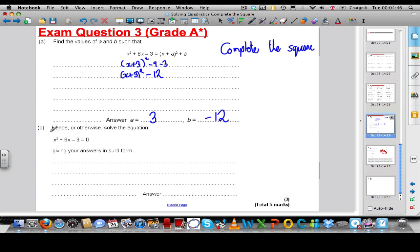The question then said, hence or otherwise solve this equation. Hence is a word that means using what we've just talked about. Otherwise means you can use another method. I'll show you the hence way, but the otherwise way meant use the quadratic formula because it says your answers are going to be in surds, so you know you couldn't factorize. You had to use the formula or complete the square.